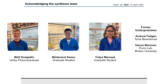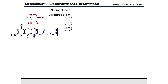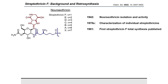Without further delay, let's talk Streptothricin F. Streptothricin F is a member of the nourseothricin mixture of streptothricin analogs. These seven analogs differ from one another in their beta-lysine homopolymer subunit length, seen here in blue. As a brief overview of the history: in 1942 this mixture was first isolated and its activity was profiled. Around 30 years later in the 1970s, the nourseothricin mixture was characterized for its individual streptothricin components.